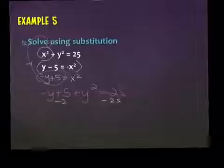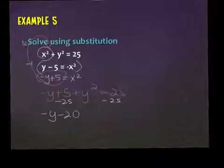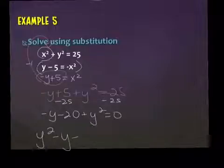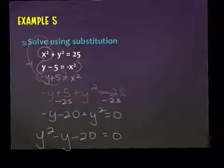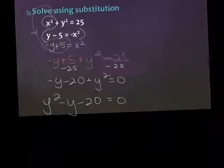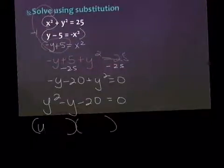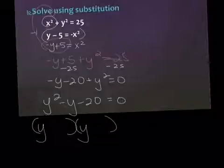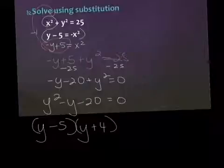So I'm going to subtract the 25, and get negative y minus 20 plus y squared equals zero. Put it in order of decreasing degree because that's what you're used to when dealing with factoring. Then I'm looking for the factors of negative 20 that sum to negative one, which would be negative five and positive four. Set each of these equal to zero.